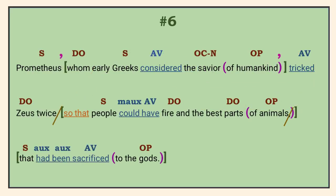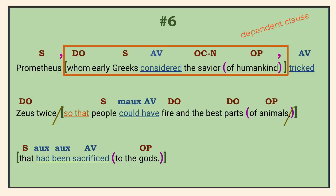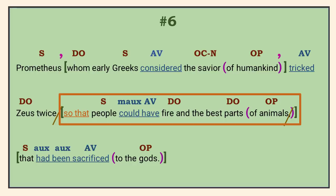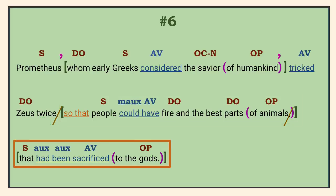Number 6. The independent clause has an object-complement noun. Greeks considered who? Prometheus. But since Prometheus is the subject of 'tricked,' the correct direct object is 'whom,' which stands in for Prometheus as a relative pronoun. The Greeks consider whom — what? The savior, a noun that renames or identifies the direct object and is the focus of the sentence. The relative clause provides extra information about Prometheus; it doesn't point out which specific Prometheus is under discussion, so it's a non-restrictive clause and needs commas on both sides. The next dependent clause is adverbial, beginning with the subordinating conjunction 'so that' and telling why he tricked Zeus. When the independent clause follows the clause whose verb it modifies, we don't put a comma in front of the adverb clause. The final dependent clause begins with the relative pronoun 'that' and identifies which specific animals, so no commas for this restrictive adjective clause.